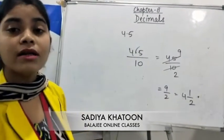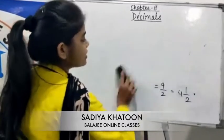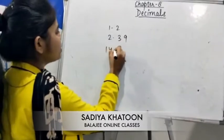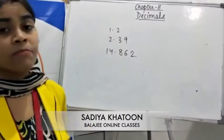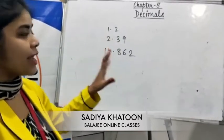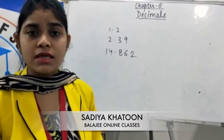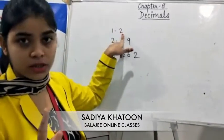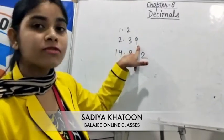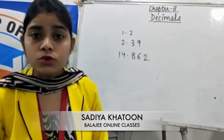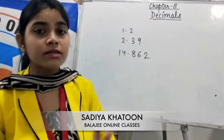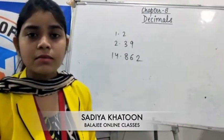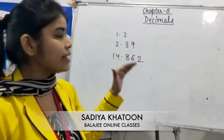The next topic is about like decimals and unlike decimals. Suppose I take 3 decimal numbers: 1.2, 2.39, and 14.862. In 1.2 there is one digit after the decimal; in 2.39 there are 2 digits; and in 14.862 there are 3 digits. To check whether they are like or unlike decimals, you just look at the number of digits after the decimal point. Since they are different, these are unlike decimals.